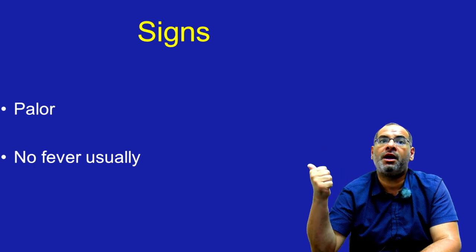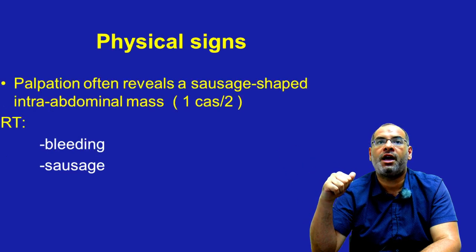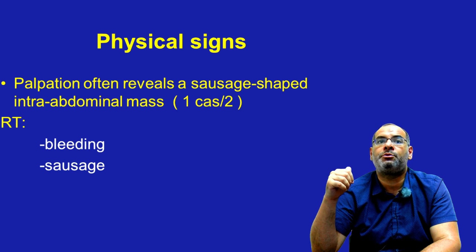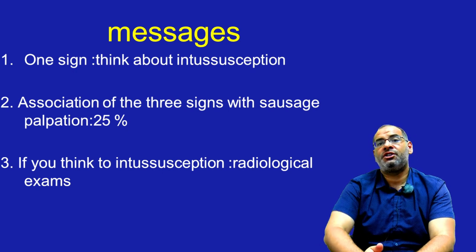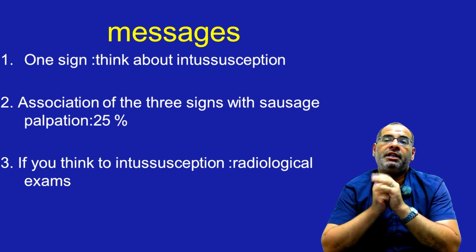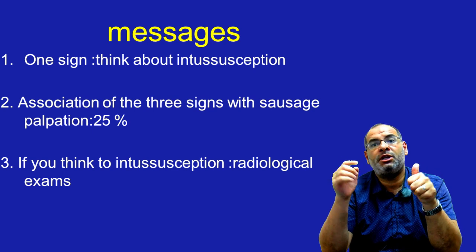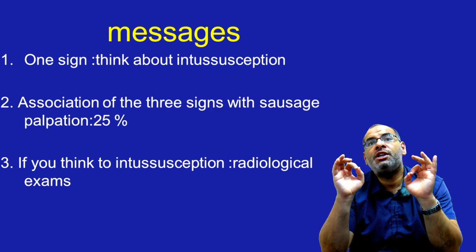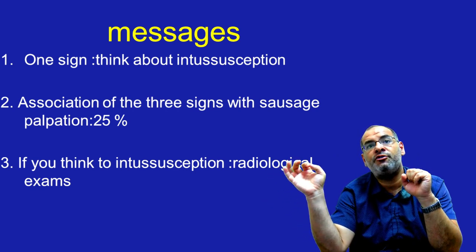Other signs can be observed, like pallor. Fever is not constant but sometimes we can have fever due to the viral agent. On palpation, we can reveal a sausage-shaped intra-abdominal mass. Rectal examination can also reveal bleeding or allow palpation of this sausage mass. Remember: the association of all three signs with sausage palpation is seen in only 25% of cases.